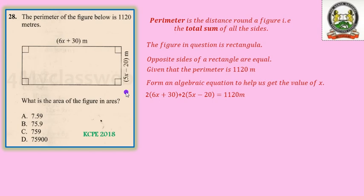Now we have to remove the bracket first, and to remove the bracket we shall have to multiply everything that is inside the bracket by the factor that is out in both cases. And therefore in this first case we should have 2 multiplied by 6x plus 2 multiplied by 30, then we shall add 2 multiplied by 5x.